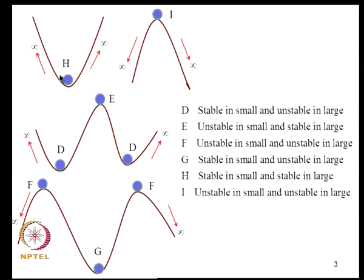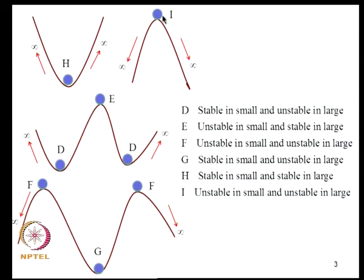Suppose there is a valley that is infinitely deep. A ball placed here will return to its original position for any perturbation, no matter how large, because of friction. We say position H is stable in small and stable in large. If the surface goes to infinity in both directions, any perturbation no matter how big or small causes the ball to end up somewhere else — it is unstable in small as well as in large.